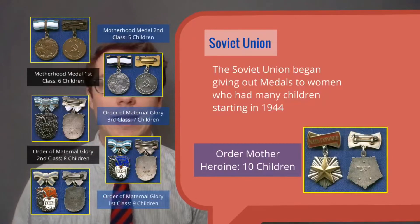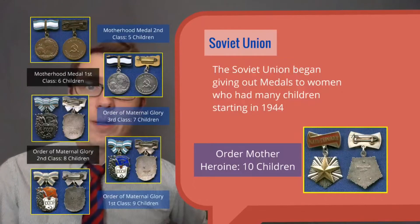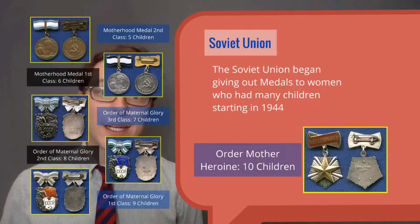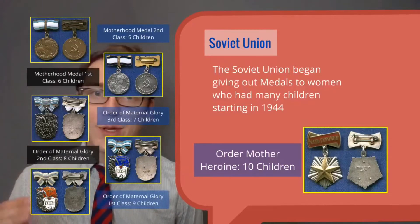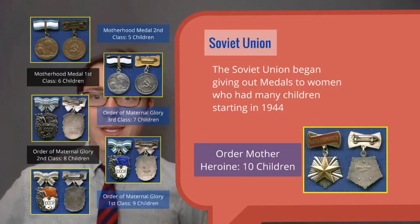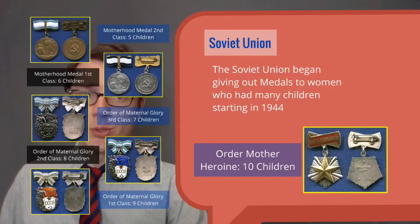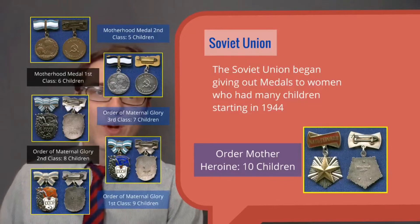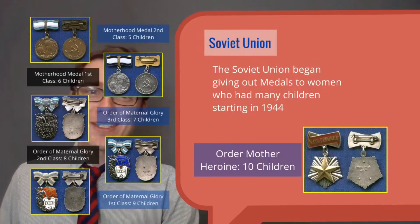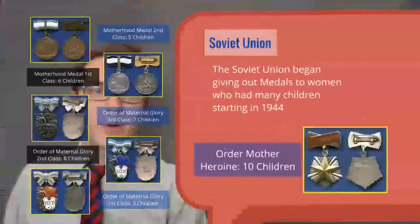The Soviet Union in 1944 started: if you had at least five children, you earned the Motherhood Medal Second Class; six children earned you First Class. If you had seven through nine children, you would get the Order of Maternal Glory — nine earned you First Class of that medal. And for having ten children, you could earn the highest rank Russia's mothers could gain, which is the Order Mother Heroine. That only required giving birth to ten different kids, which is not a walk in the park.